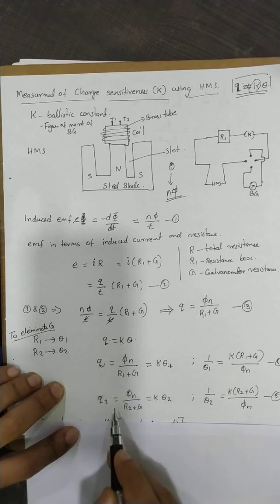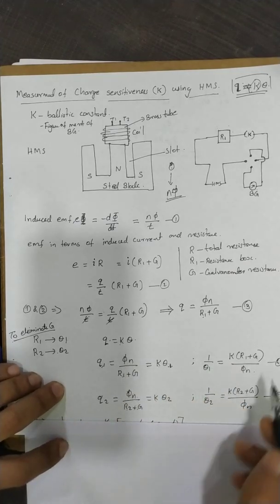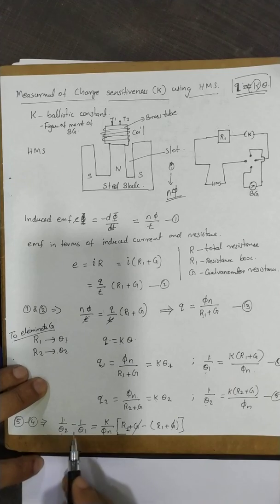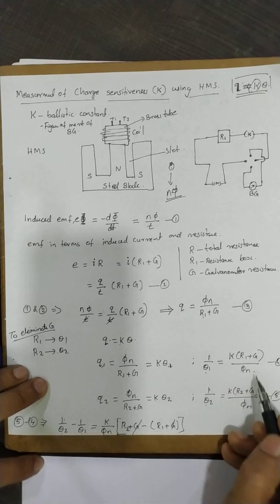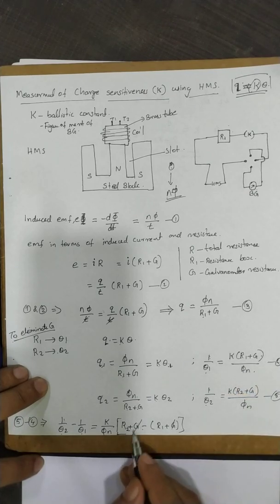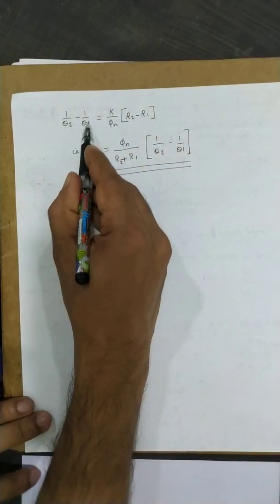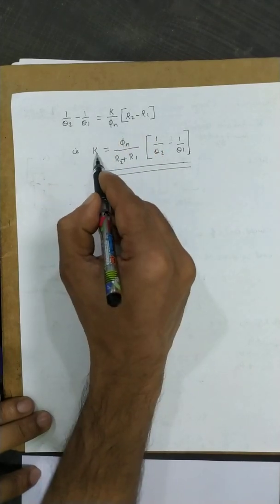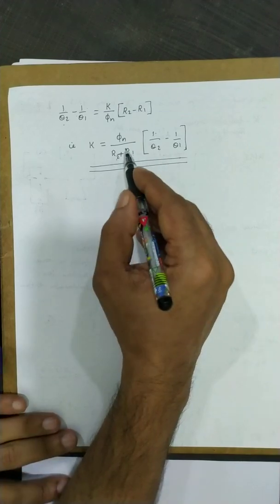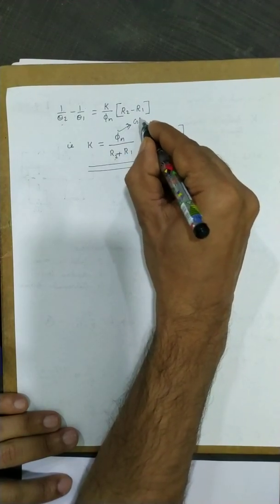Subtracting equation 4 from the second trial equation, we get 1/θ2 minus 1/θ1 equals K/nΦ times (R2 + G minus R1 minus G), which simplifies to K/nΦ times (R2 minus R1). Here nΦ is the standard value given for the HMS.